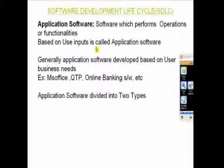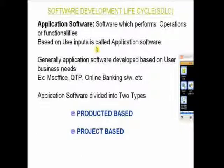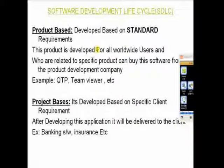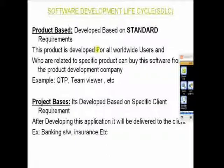Application software is further divided into two types: product-based and project-based. Project-based software is developed as per a specified client requirement — there is a client, there is a company, the client gives requirements, we develop the application and hand it over to the client. We are not going to sell it in the market. That's called project-based software.